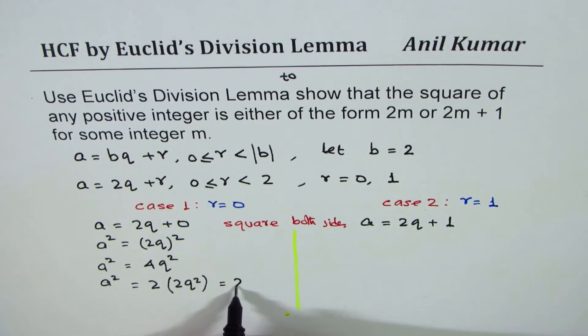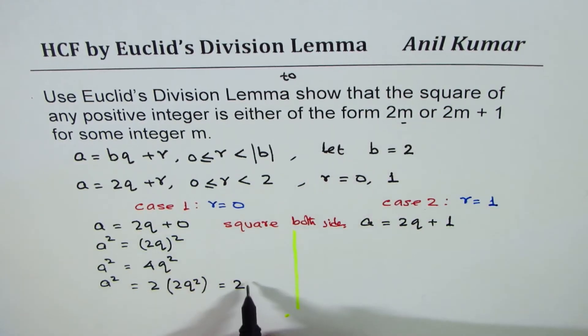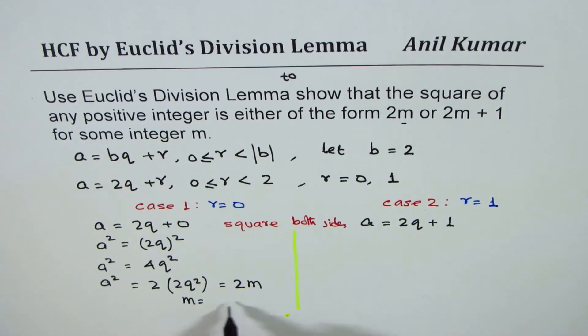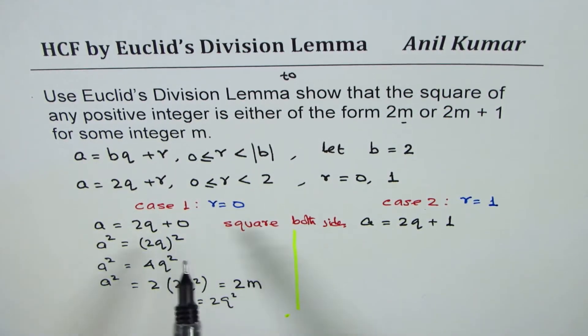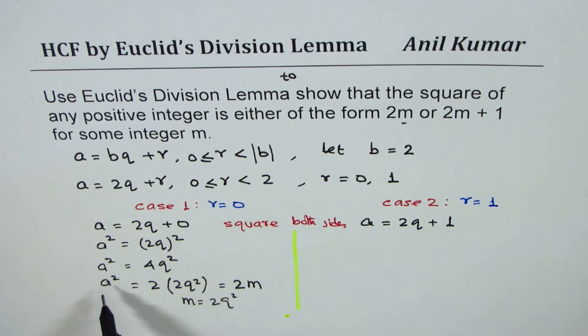We can write this as 2m, where m = 2q². So we have proven that if r = 0, then the square of an integer is twice another integer. Now let's look into Case 2.